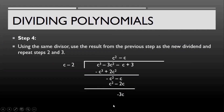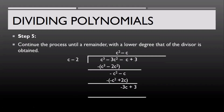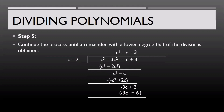After getting the difference, we bring down the next term, which is 3. Step 5: continue the process until the remainder has a lower degree than the divisor. Negative 3c divided by c gives us negative 3. Negative 3 multiplied by c gives negative 3c, and negative 3 multiplied by negative 2 gives positive 6. Then change the sign of the subtrahend, which gives us 3c minus 6.